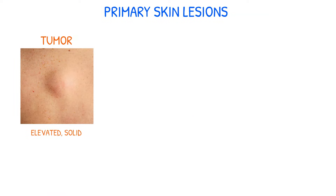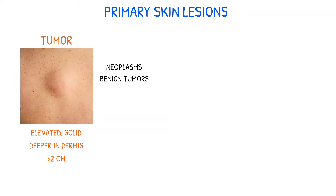A tumor is an elevated, solid lesion that may be clearly demarcated and is deeper into the dermis. It's more than two centimeters in diameter. Some examples of tumors include neoplasms, benign tumors, lipomas, and hemangiomas.